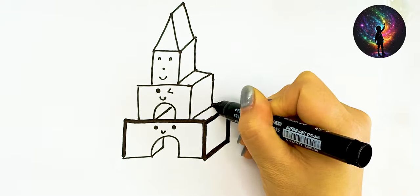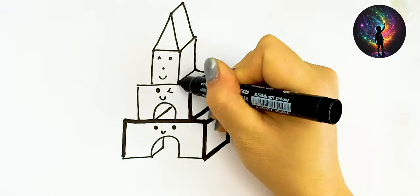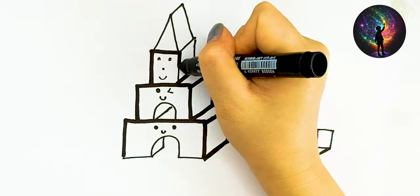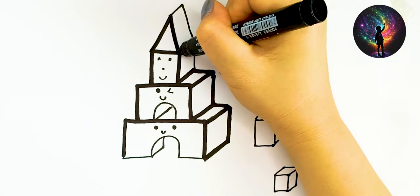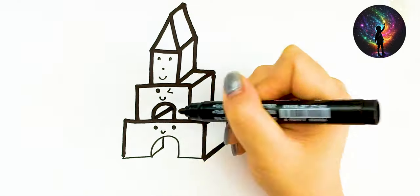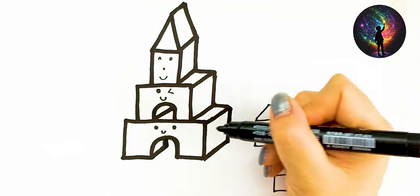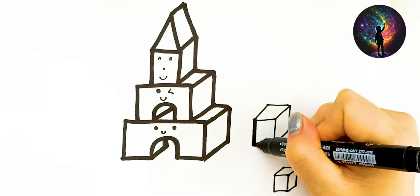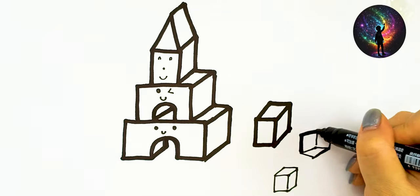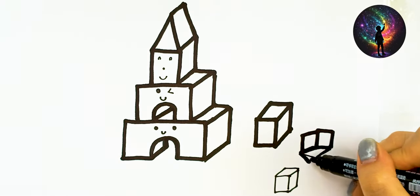A, B, C, D, E, F, G, H, I, J, K, L, M, N, O, P, Q, R, S, T, U, V, W, X, Y, and Z. Now I know my ABCs. Next time won't you sing with me?